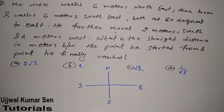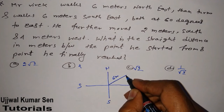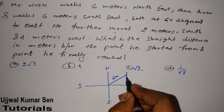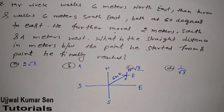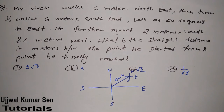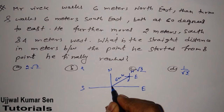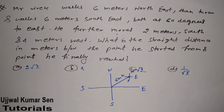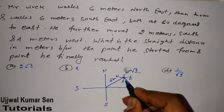The problem states that Mr. Vivek walks six meters north-east. At every end point, we will note the direction so we don't make mistakes analyzing direction. From that point, he then walks six meters south-east.